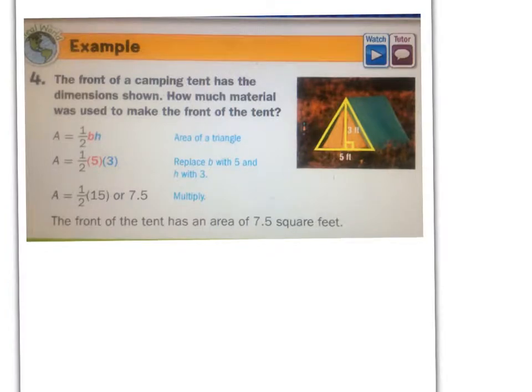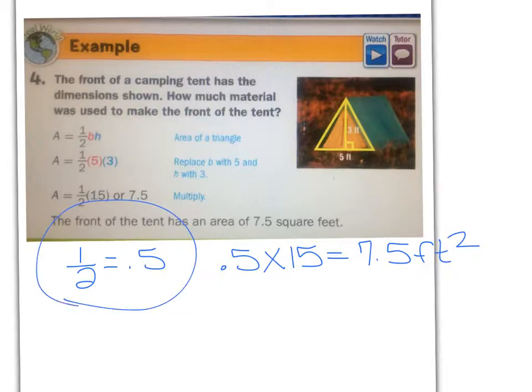Let's do a real-world example. The front of a camping tent has the dimensions shown. It has a height of 3 and a base of 5. How much material was used to make the front of the tent? When they ask you something like how much material would cover an area, that is an area question. So we will plug the information that we have into our formula. Area equals 1 half times 5 times 3. Area equals 1 half times 15 or 7.5. Remember, 1 half equals 0.5 if you're using a decimal. You can do 0.5 times 15 on your calculator, which would give you 7.5 feet squared. Please don't forget that. That is super important. Go ahead and go to your last page. We are almost done with this lesson.